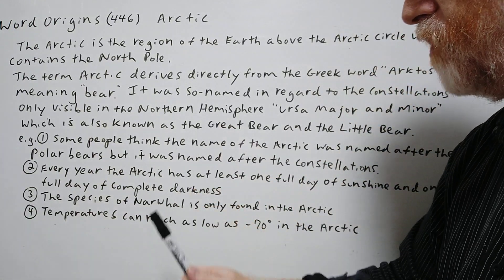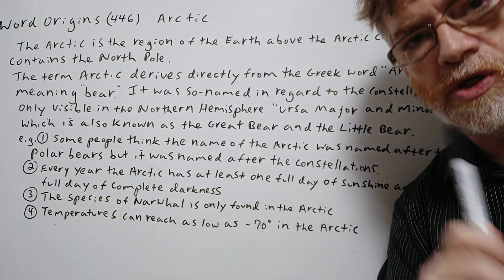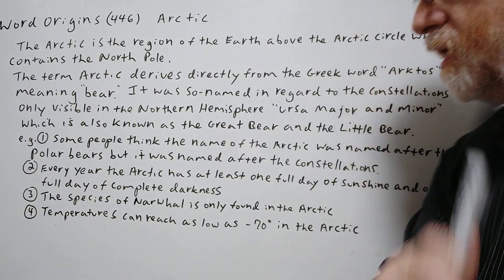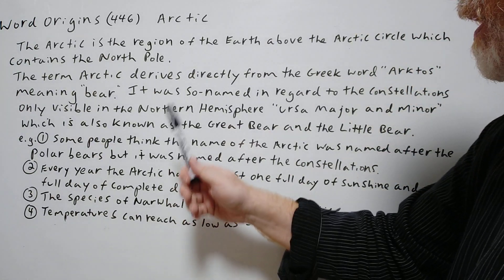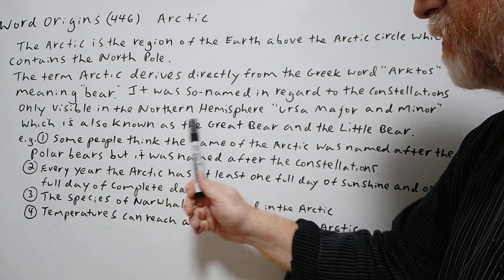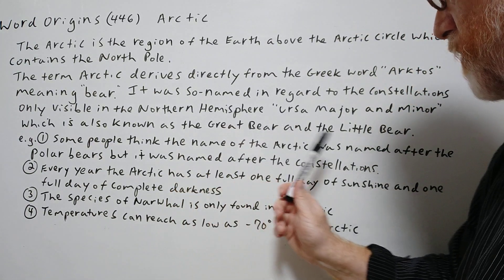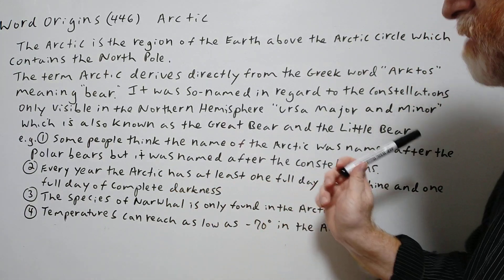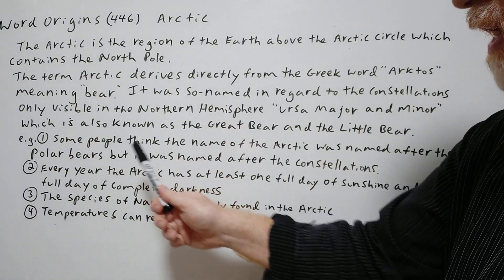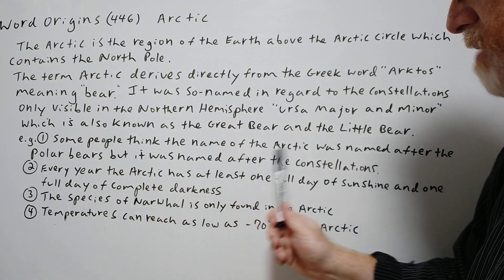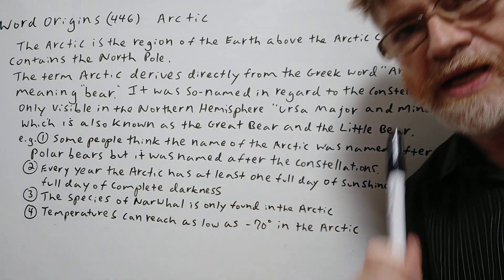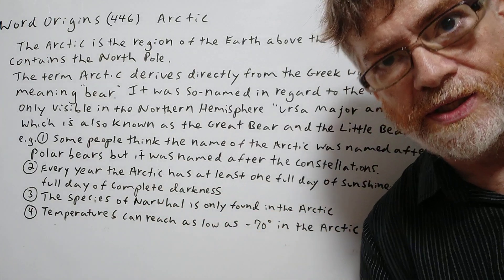We have four examples here to show how it's used. Number one: some people think the name of the Arctic was named after the polar bears, but it was actually named after the constellations.